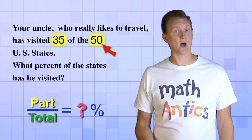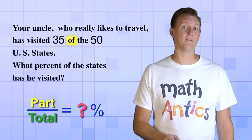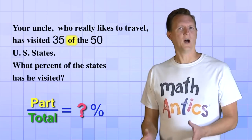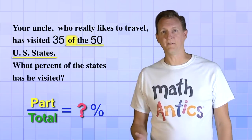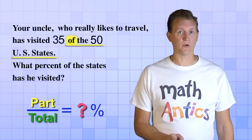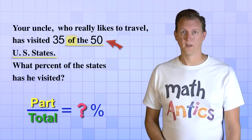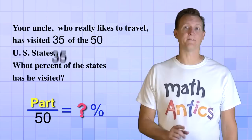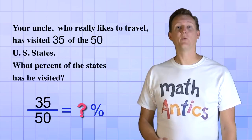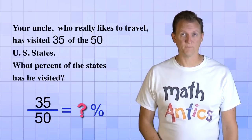The word of usually goes in front of the number that's the total. So when you see, Of the 50 US states, it's a clue that 50 is the total. Alright then, so we put 50 on the bottom of the fraction and 35 on top. Now we're ready to figure out the part that we don't know, the percent.